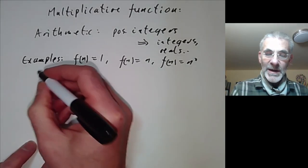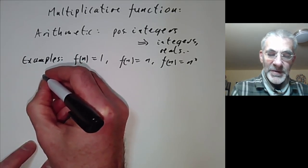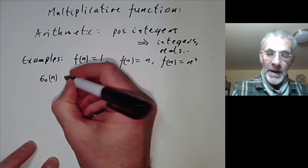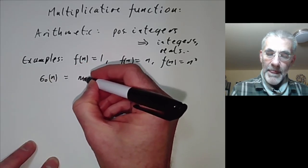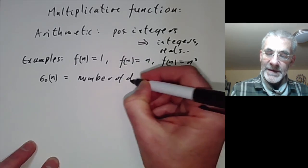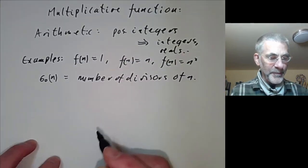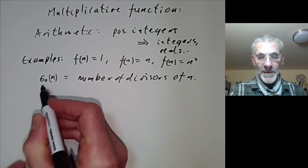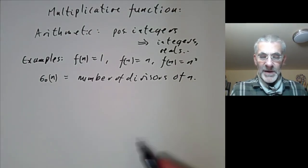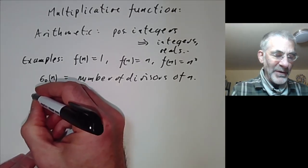A typical example of a number-theoretic arithmetic function is sigma_0 of n, which is the number of divisors of n. The subscript 0 will be explained a little bit later. Let's start by computing some values of it.